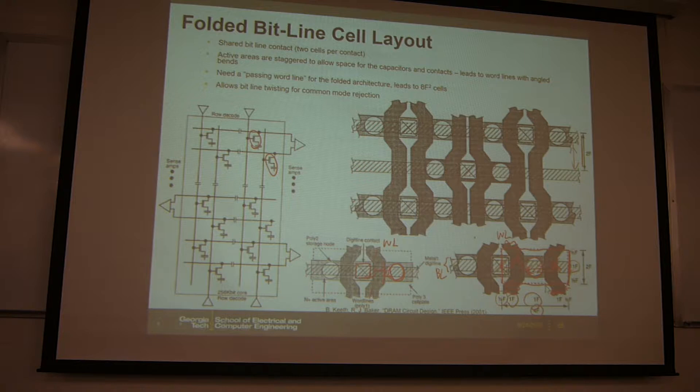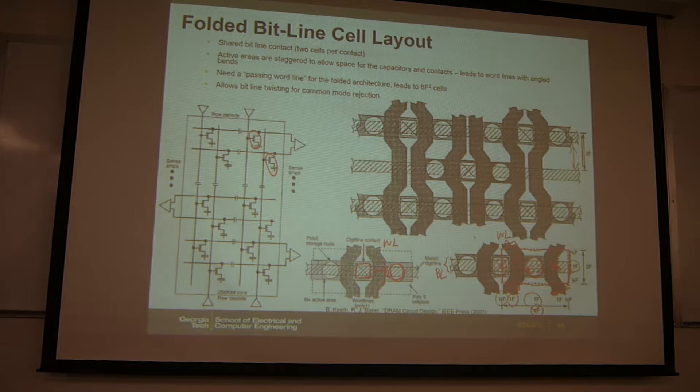This is what you see when you zoom in to the layout. Even from the previous slide, without the detailed layout, you can see two wires times one wire gives 2F times 4F, which equals 8F squared. The green square is the contact to the bitline. The circle represents the trench capacitor going down to the substrate.